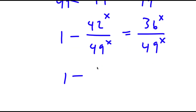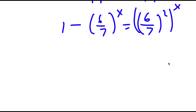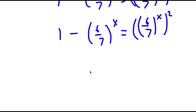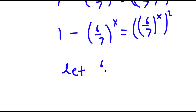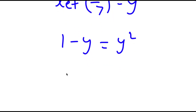Now, 42 over 49 is the same thing as 6 over 7, so we have 6 over 7 to the power of x. And I can switch the placement, so this is the same thing as 6 over 7 to the power of x squared. Now I'm going to let 6 over 7 to the power of x equal the variable y. So now I have 1 minus y is equal to y squared.